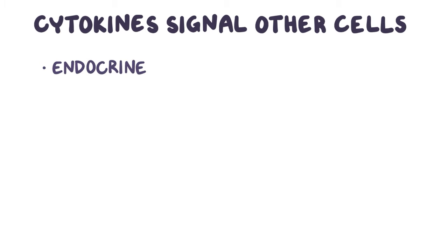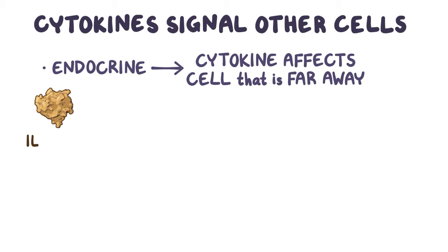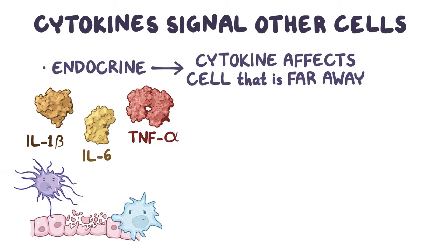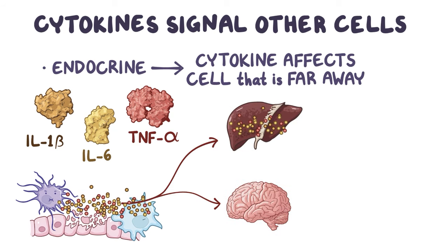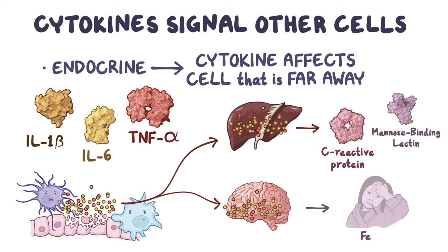Finally, there's endocrine, which is when the cytokine affects a cell that's far away, perhaps in a different organ. An example would be the inflammatory triad of interleukin-1-beta or IL-1-beta, interleukin-6 or IL-6, and tumor necrosis factor alpha or TNF-alpha. These cytokines are produced by macrophages and dendritic cells. During acute inflammation, these cytokines travel to the liver and brain. In response, the liver produces acute phase reactants like C-reactive protein and mannose-binding lectin, and the brain increases the body's temperature, triggering a fever.